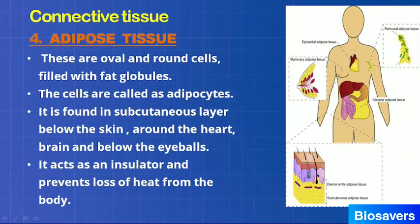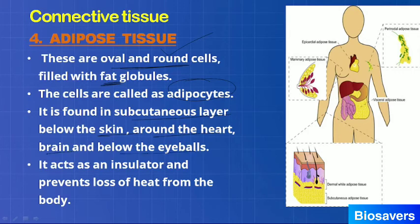The last type of connective tissue is adipose tissue. Adipose tissue cells are oval and round and are filled with fat. Such cells are called adipocytes. They are present below the skin layer, around the heart, near the brain, and below the eyeballs — wherever fat is present. They help prevent heat loss from the body.